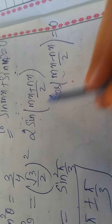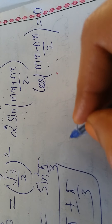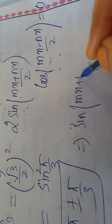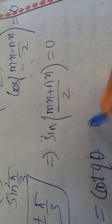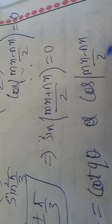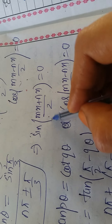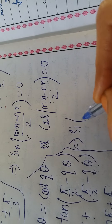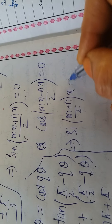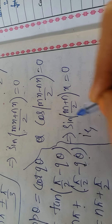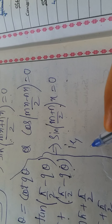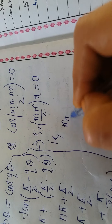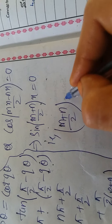The product of two quantities equals 0 when either term is 0. The factor 2 won't be 0, so either sin((m+n)x/2) = 0 or cos((m-n)x/2) = 0. For sin((m+n)x/2) = 0: applying sinθ = 0 ⟹ θ = nπ, but since n is already used in the question, we use p. So (m+n)x/2 = pπ, giving x = 2pπ/(m+n), p ∈ ℤ.